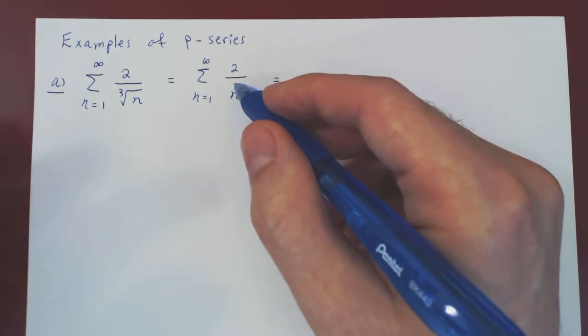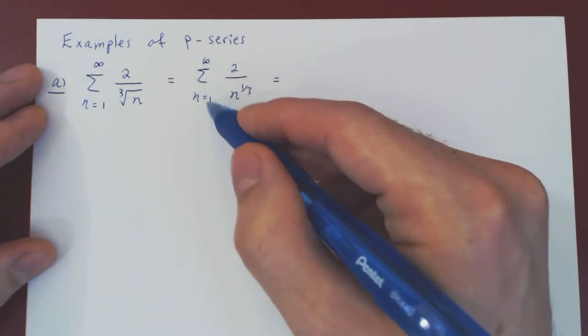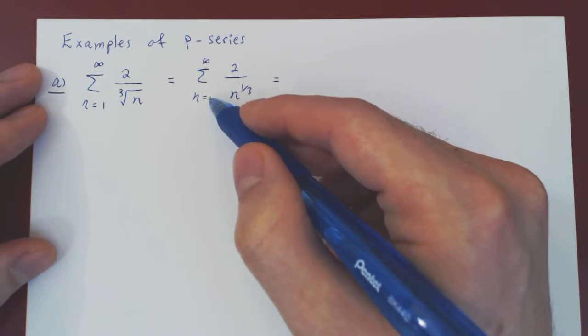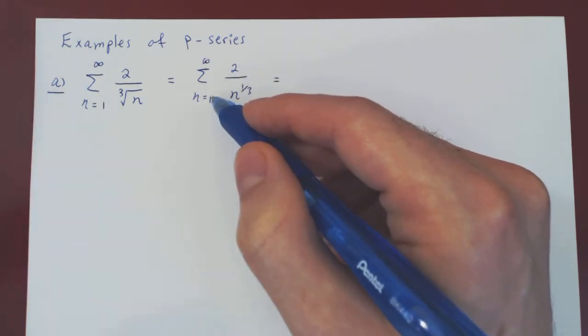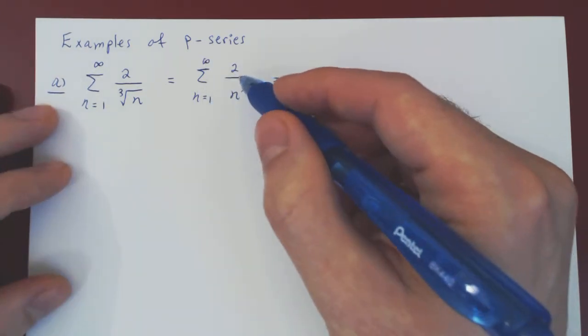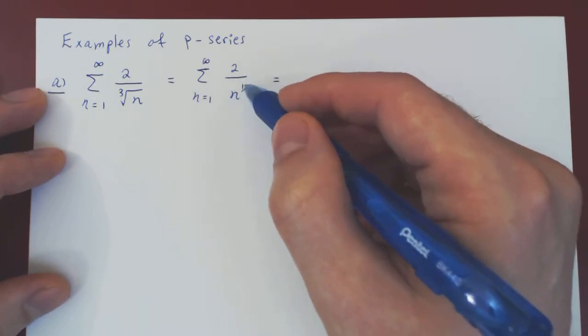But, we look at a generic p-series as summing from 1 to infinity. Of course, we could start summing at any other point, that doesn't matter, we could start summing at 10. The result would still apply. But we are summing 1 over n to the p.